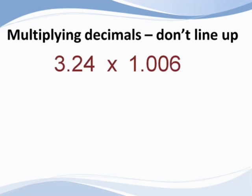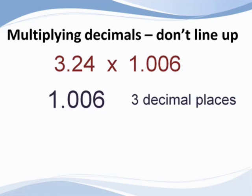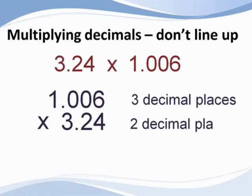For example, suppose we want to multiply the two numbers together shown on the screen. The first number, one and six thousandths, has three numbers to the right of the decimal point. The second number, three and 24 hundredths, has two decimal places.